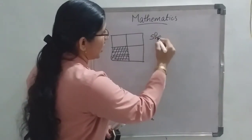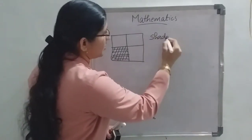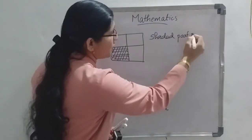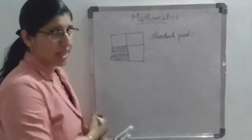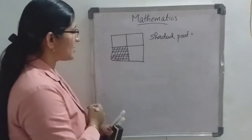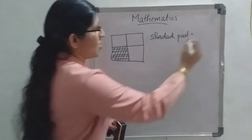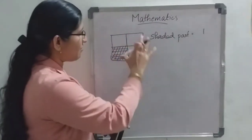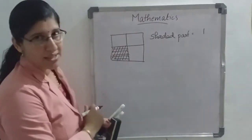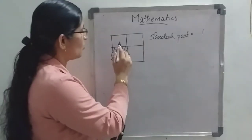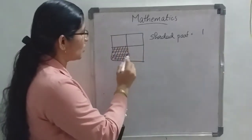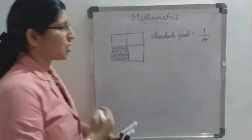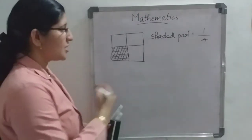Fraction of the shaded part. Suppose the question asks for the unshaded part — you need to write it differently, and I will show you that. Here, how many parts are shaded? One part is shaded. What is the total number of equal parts? 1, 2, 3, 4. So 1 by 4 is the fraction of the shaded part.